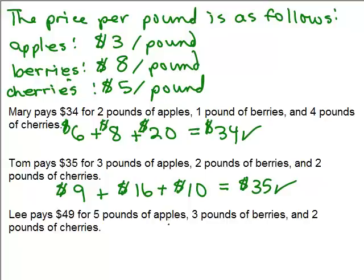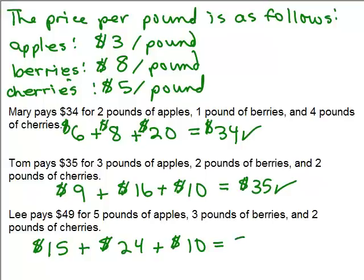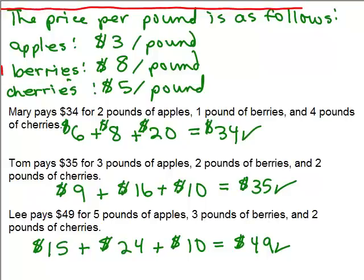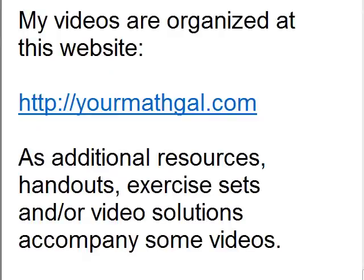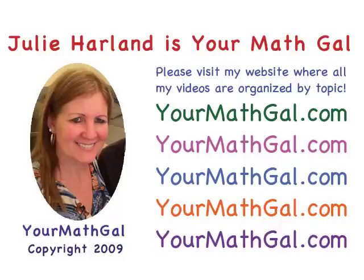Lee buys 5 pounds of apples at $3 a pound — that's $15 — plus 3 pounds of berries at $8 a pound — $24 — and 2 pounds of cherries at $5 a pound — $10. So 15 + 24 + 10 = $49. That definitely checks out. This is our final answer to that problem. Please visit my website at yourmathgal.com where you can view all of my videos organized by topic.